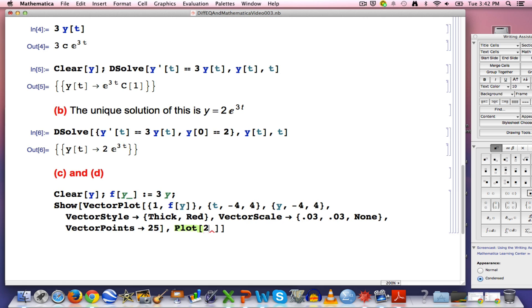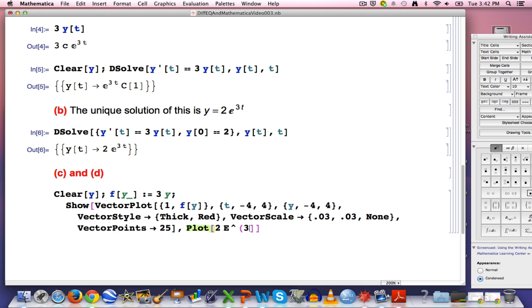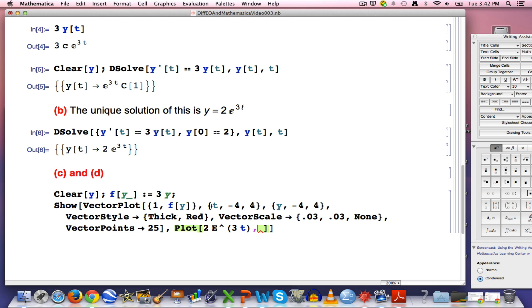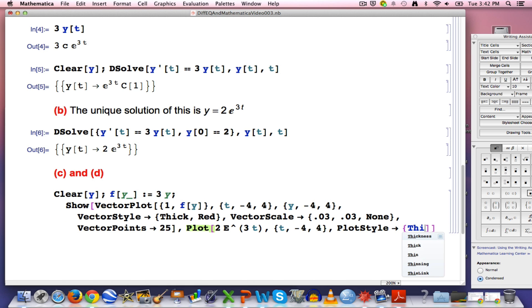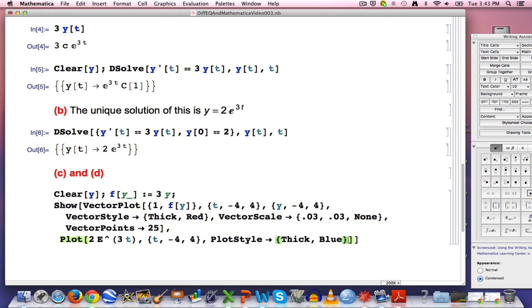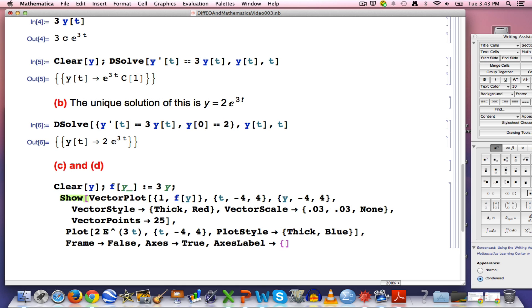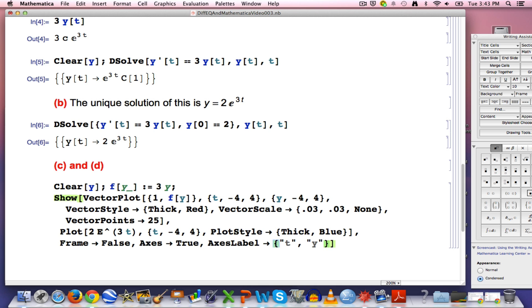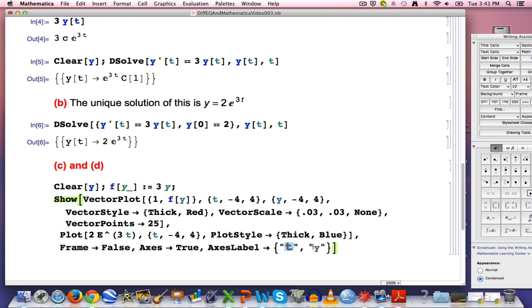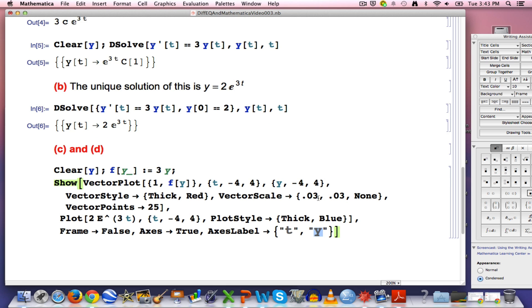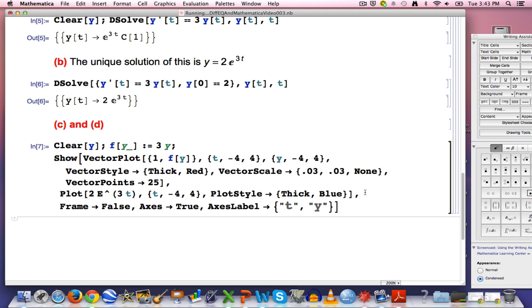Plot the function. The function is 2e to the 3t. So t goes from negative 4 to 4. PlotStyle, let's make this one thick and blue. I think I won't bother plotting the initial condition, but I do want to get rid of the frame. This will generate Frame arrow false, Axes arrow true, AxisLabel arrow t comma y. Let's make those bigger. Alright, I think this is ready to enter here. There we go.